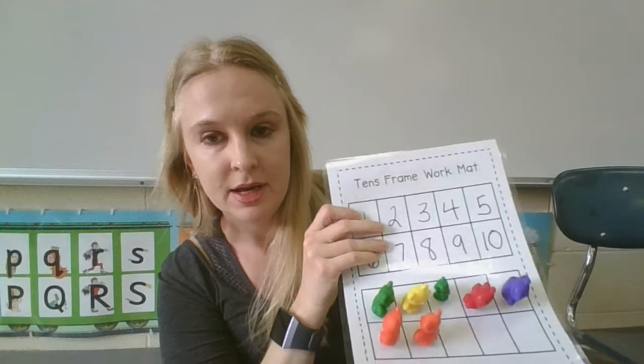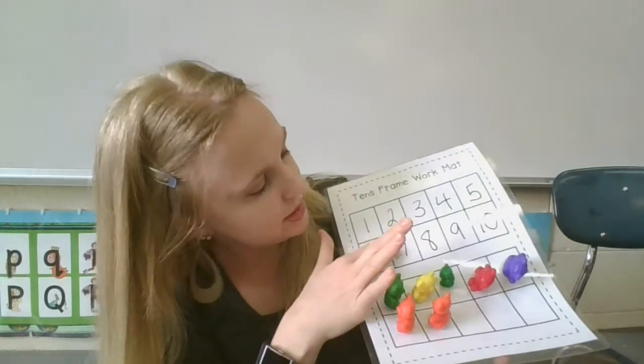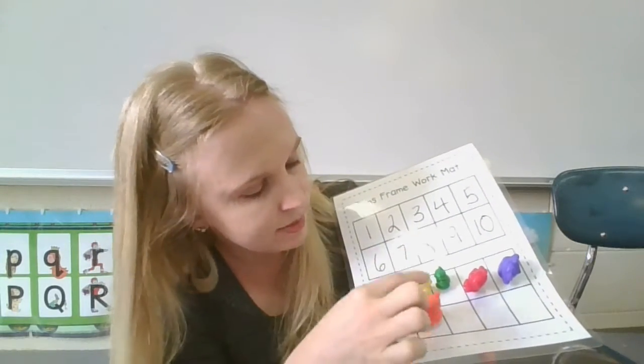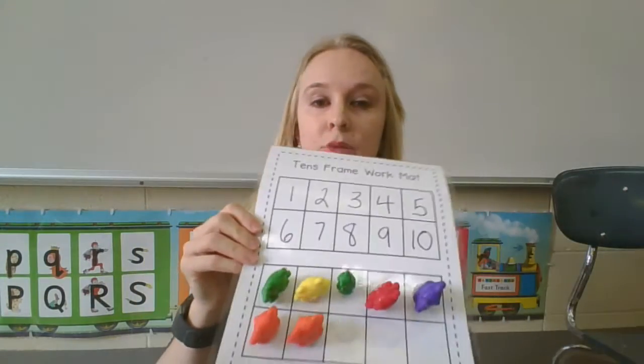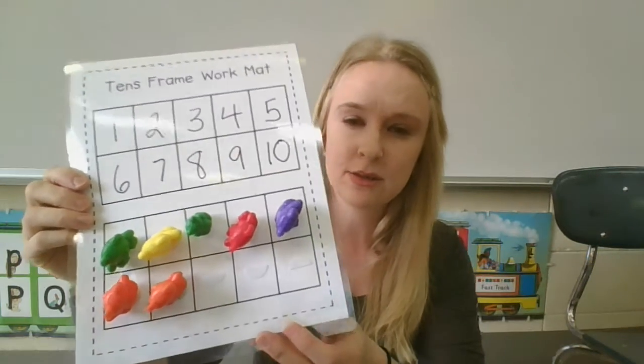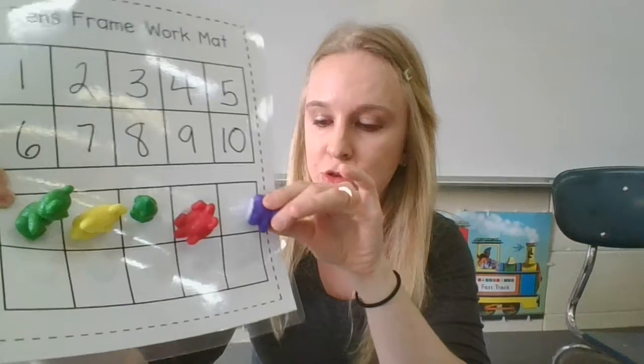And we can also look up here and see that 7 is here, the same as where our last bear is on the bottom. Okay, how many are we going to take away? Let's take away 3, so we're going to do 1, 2, 3.